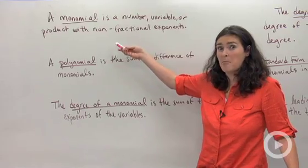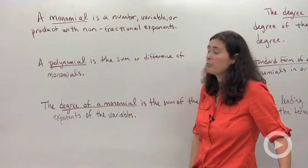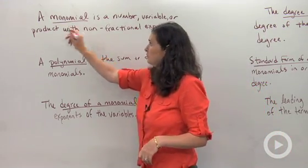First thing is we've got to figure out what a monomial is. A monomial is a number, variable, or product with non-fractional exponents. So it might look like this.